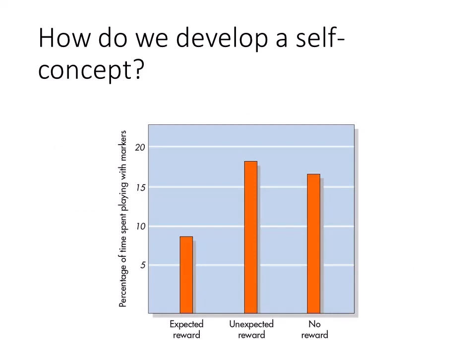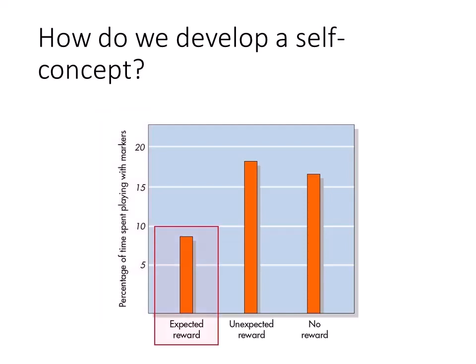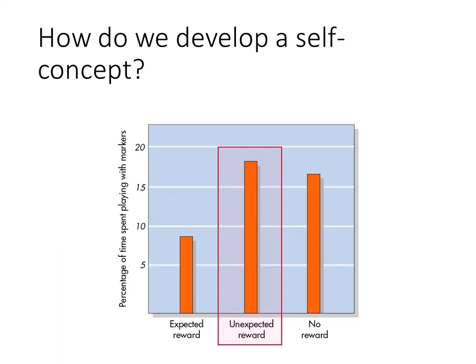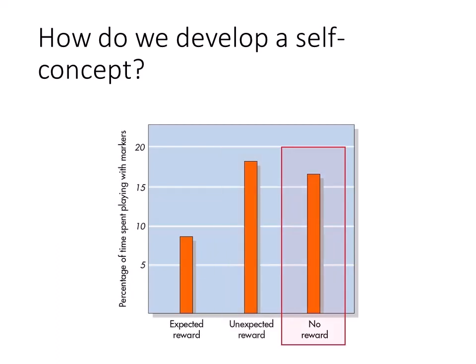Let me tell you about one of the studies that investigated the over-justification effect. Researchers recorded the amount of time school-aged children spent playing with some markers before abandoning them, represented by the vertical axis in this graph. The assumption is that the children intrinsically enjoy playing with markers. There were three conditions represented by the horizontal axis: in one group, children were told they would receive a reward and they received it; in the second group, they did not expect a reward but received the same reward; in the third group, they received no reward. Conventional wisdom says the rewarded children should spend more time playing with markers, but that's not what happened. The children who did not expect to be rewarded spent more time playing with the markers compared to those who expected a reward — these results represent the over-justification effect, the tendency for external motivators like rewards to undermine intrinsic motivation.